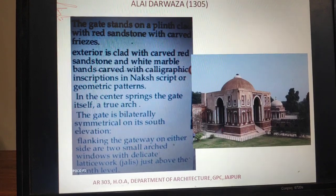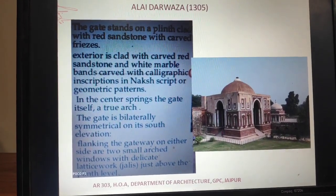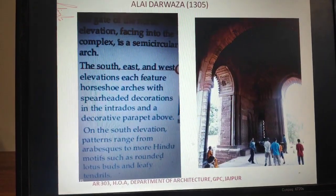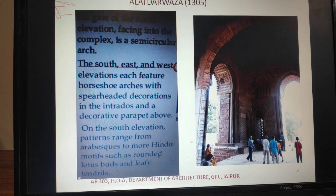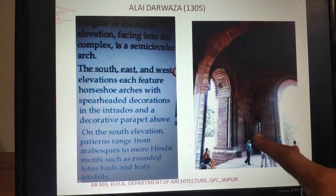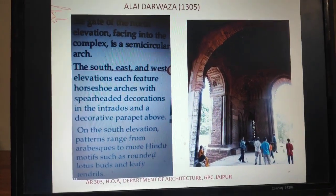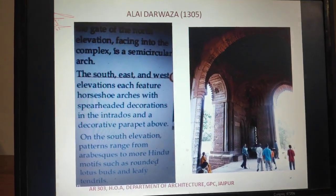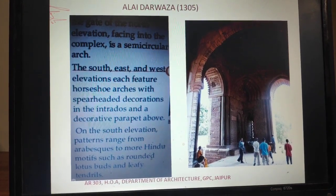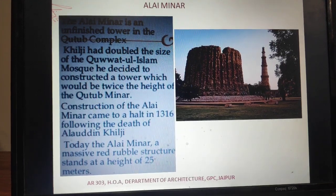The decoration in Alai Darwaza is very intricate. It is a little Hindu in style, with elements like lotus leaves and lotus buds. You can see the interior of Alai Darwaza in this figure — it is very beautifully carved inside the red sandstone.